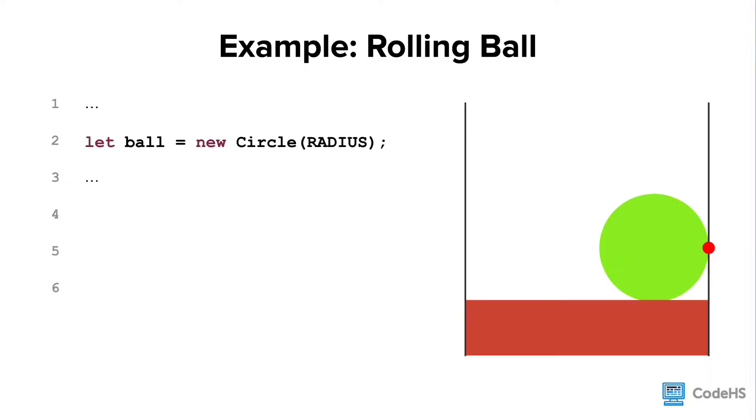Imagine the program has already set up a rolling ball, which is stored in the variable ball. Let's determine the coordinate of the right side of the ball and save it into the variable ball right. First, let's get the x coordinate of the ball's anchor point, which is the center.